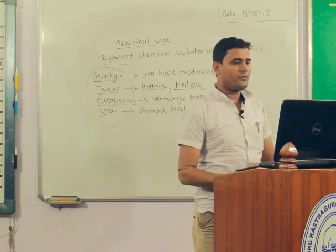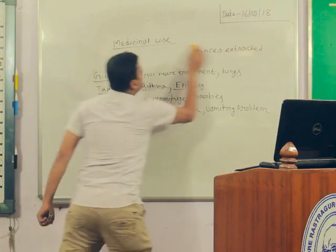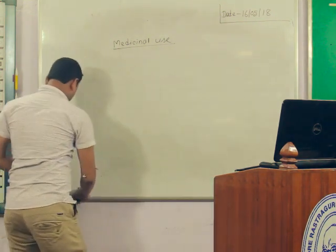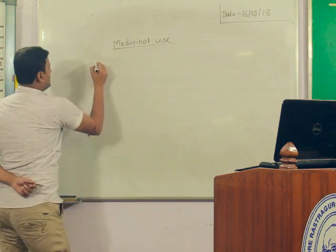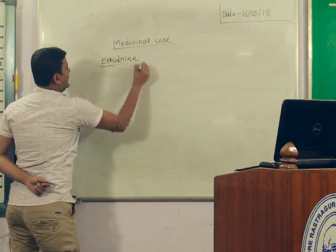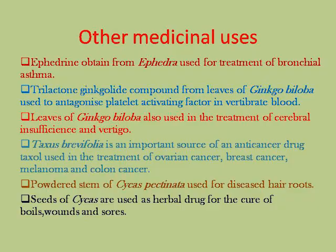One very important medicinal compound is ephedrine. It is obtained from Ephedra and is used for bronchial asthma.